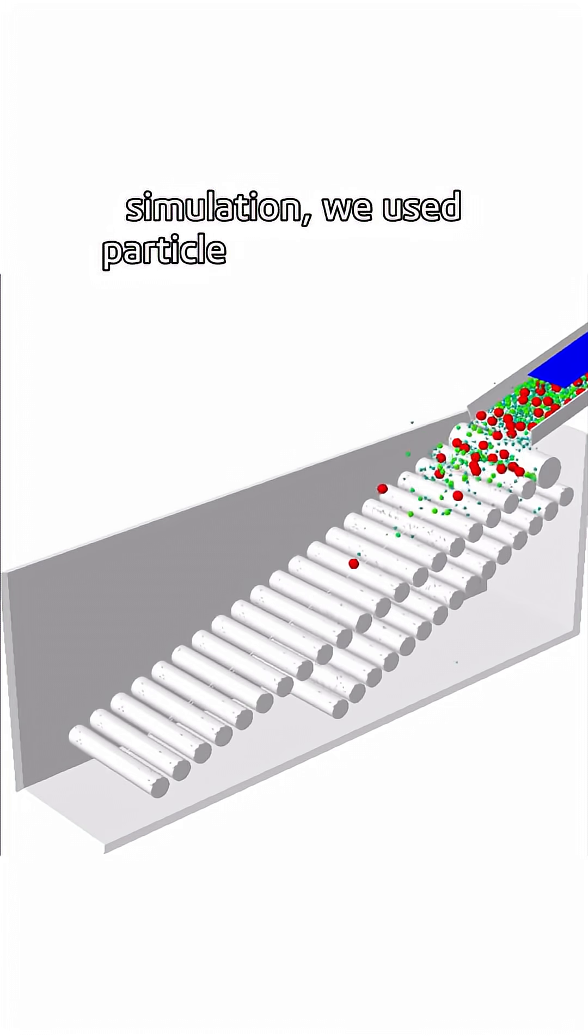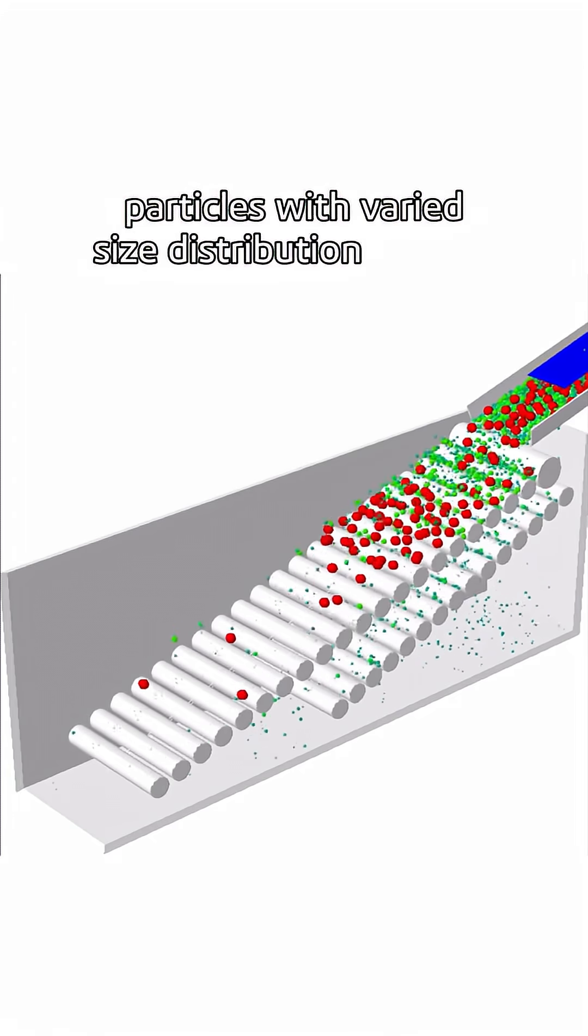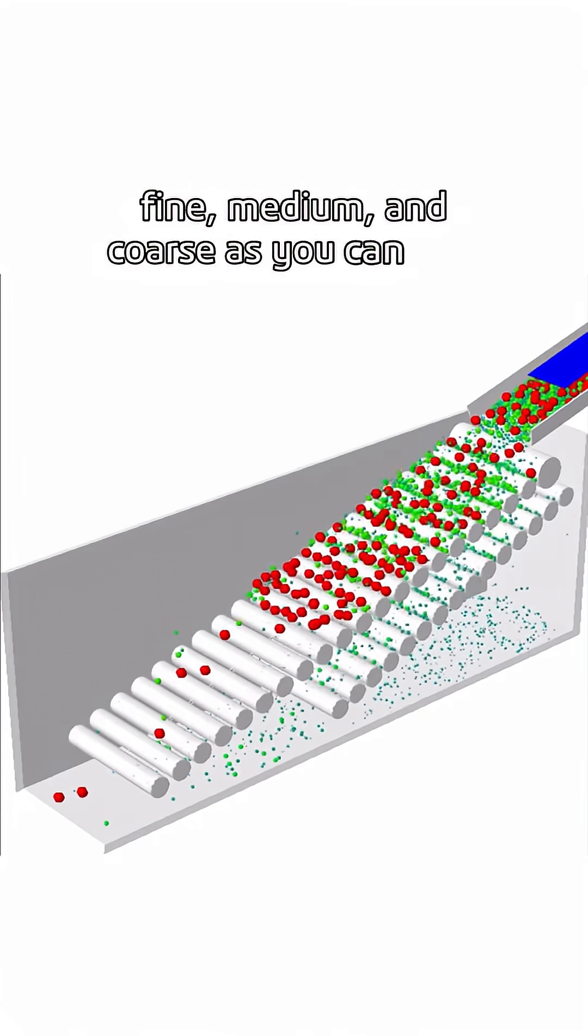In this simulation, we use particle generator with probability density function to create particles with varied size distributions such as fine, medium, and coarse as you can see.